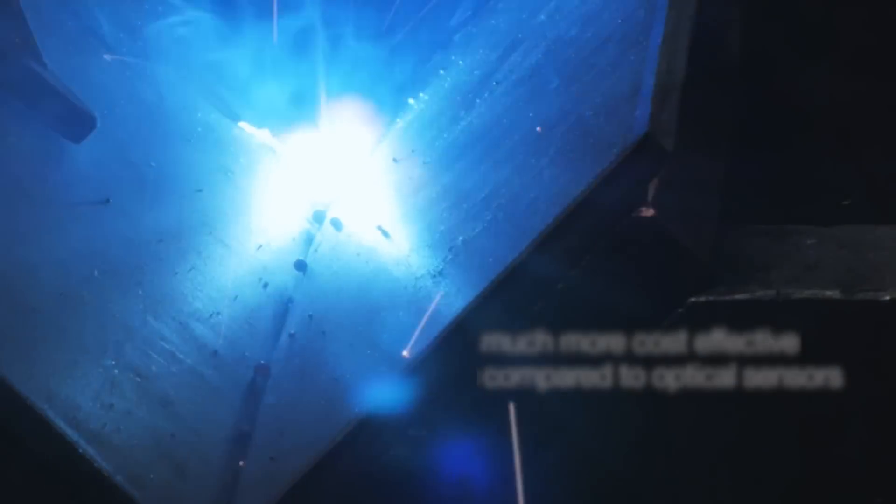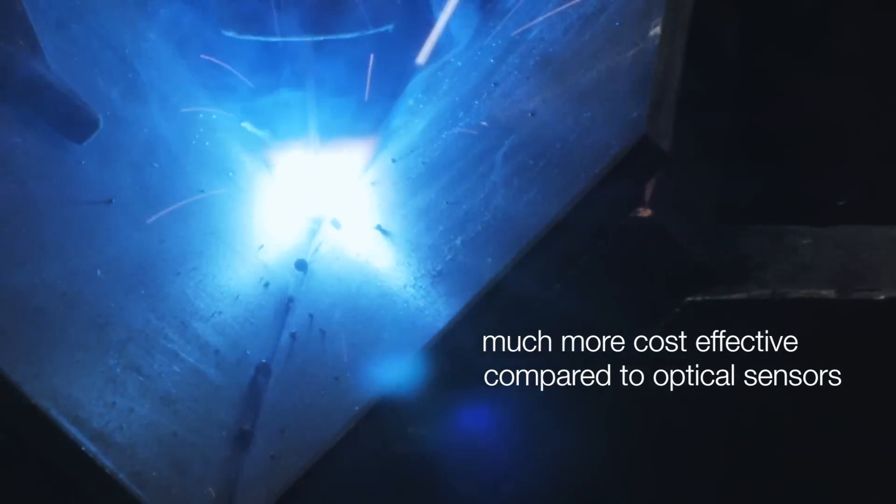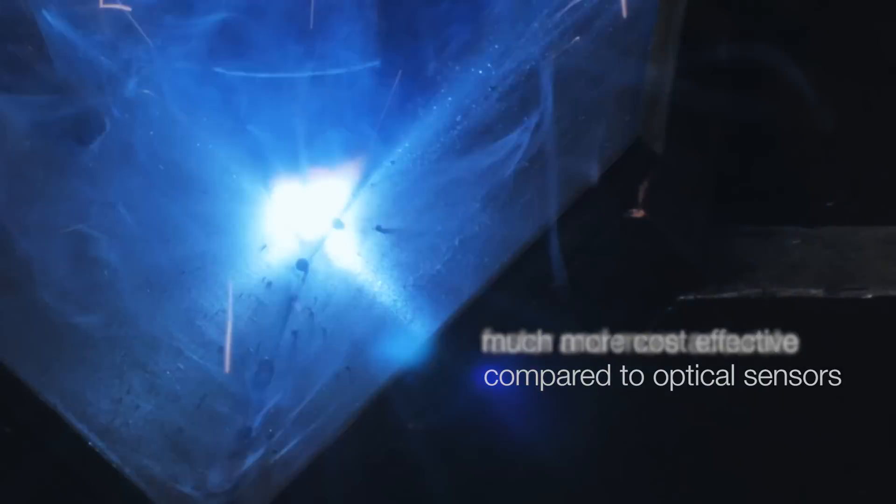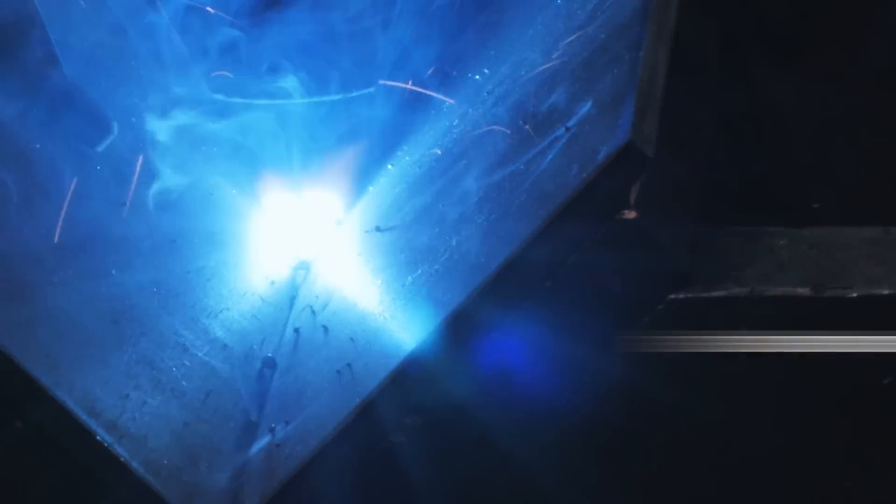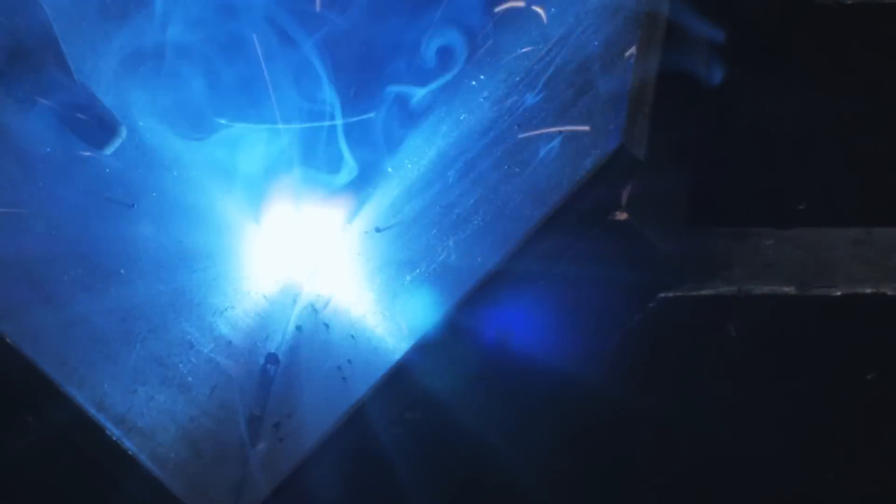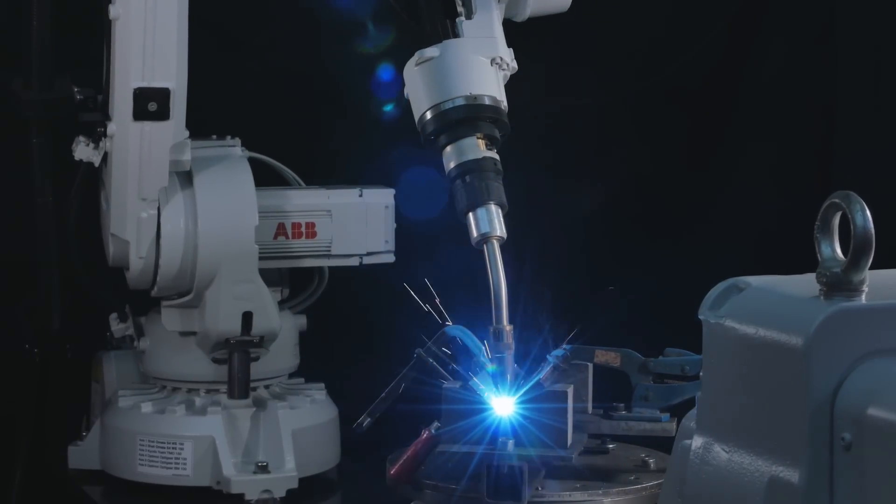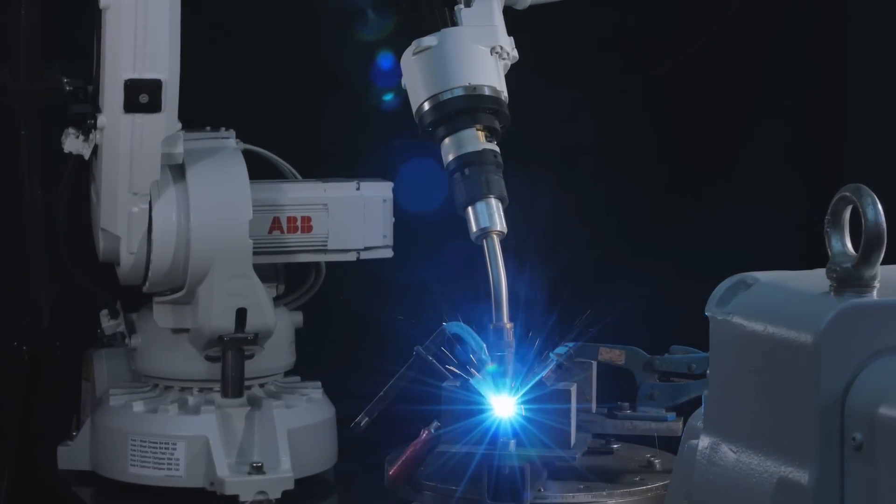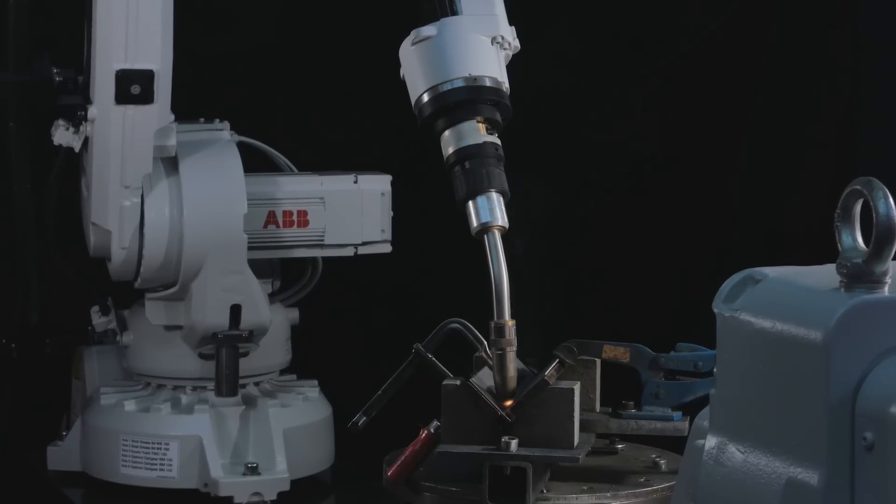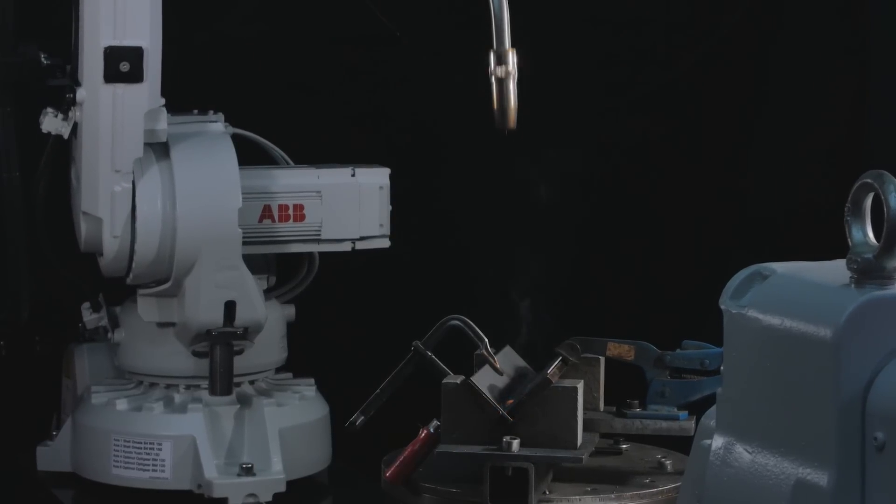WeldGuide 4 is much more cost-effective compared to optical sensors and faster and more accurate than power source-based solutions. Designed for ABB robotic welding systems with TrueMove technology, it can handle impedance values 25,000 times per second.